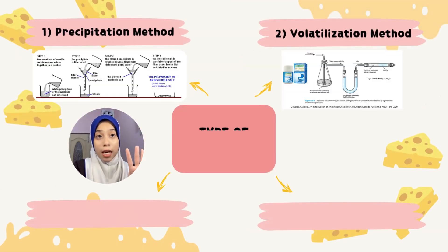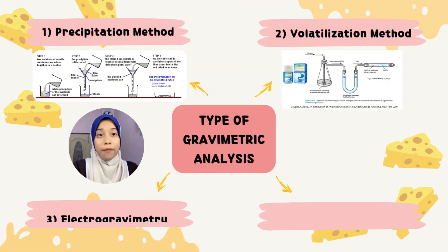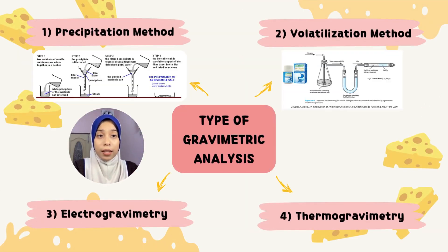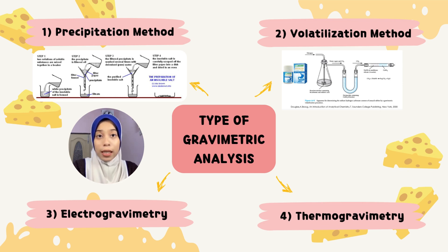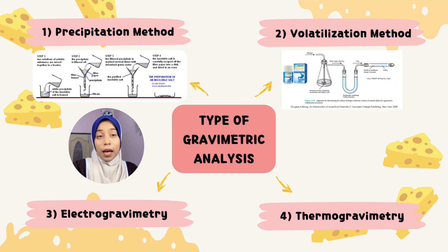There are four types of gravimetry analysis. The first one is the precipitation method, which is the one we use in determining fat content in cheese. Second, the volatilization method. Third, the electrogravimetry method. And lastly, the thermogravimetry method.